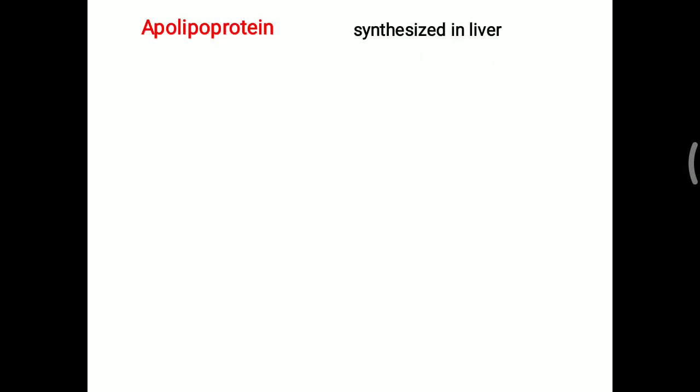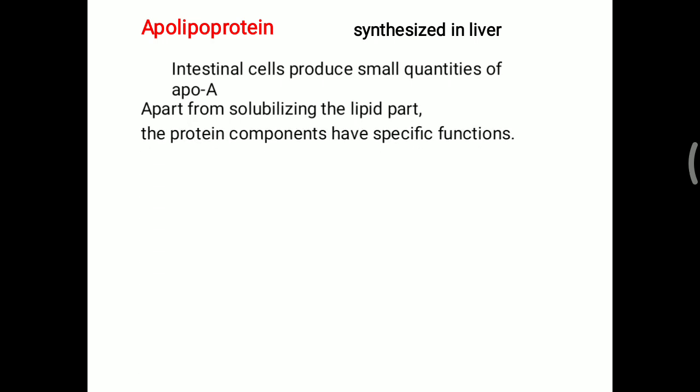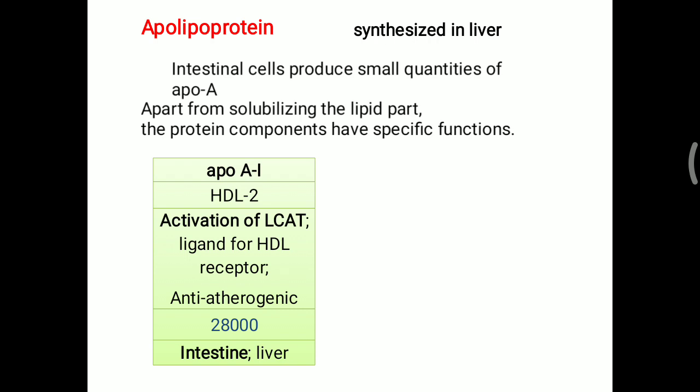Today's topic is apolipoprotein — the protein part of the lipoprotein. All proteins are generally produced by the liver, but apolipoprotein found on lipoproteins is also sometimes produced by other cells, especially intestinal cells, which are responsible for forming Apo A. The main function of apolipoprotein is solubilizing lipoproteins inside the plasma, since lipids are insoluble in water. They also activate certain enzymes.